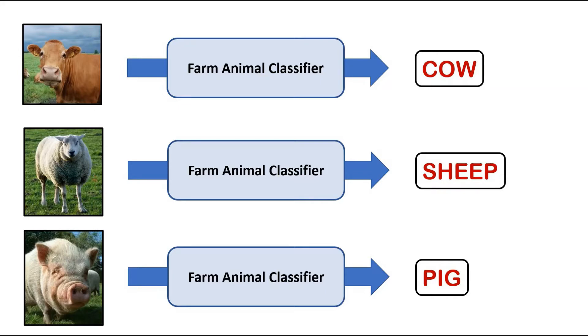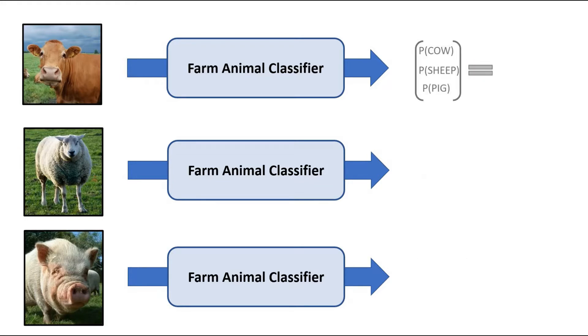So in reality, the model doesn't directly predict the classification of the input image, but it instead returns a probability distribution over the three classes using something like a softmax after the final layer.